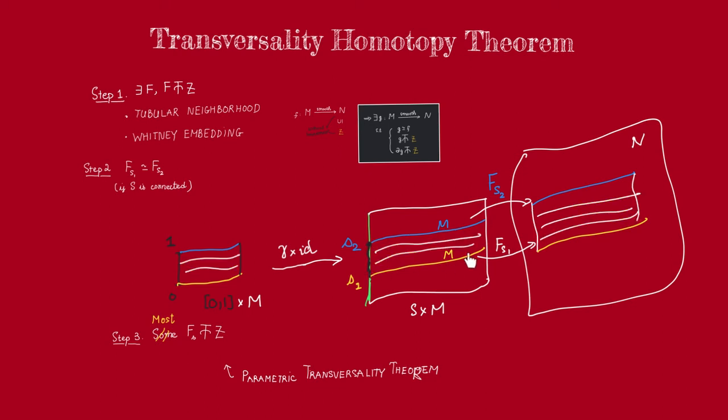Thus, any two maps in this family must be homotopic. In particular, every map in this family must be homotopic to our original map, letter F.